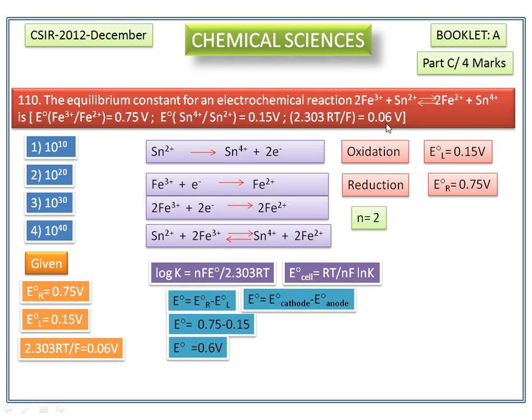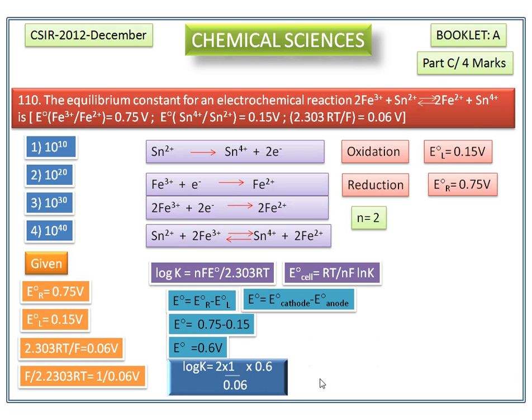But we need F by 2.303RT, so invert this equation. We get 1 by 0.06. Now we have all the values. Substituting this n value, this value, this value, and E° value, we get log K is equal to 20.